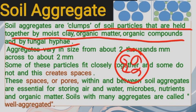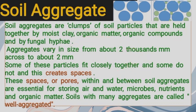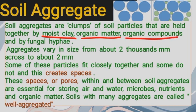Soil particles are mixed together in a clump to form a soil aggregate. Soil aggregates are formed with the help of moist clay, organic matter, and plant leaves or roots.